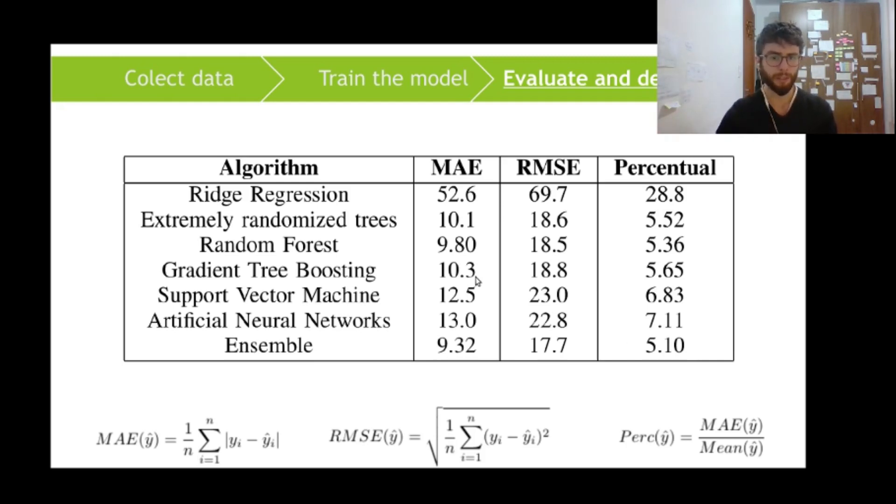But it's quite difficult for a manager or non-technical person to understand what exactly does it mean for a model to have a 10 kilowatt mean average error. So we also used the percentile error that is just the value of the mean average error divided by the average value of the output variable that gives a more easy to understand evaluation of how good the model can predict the output variable.